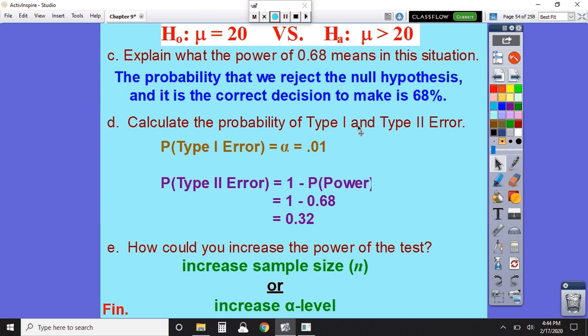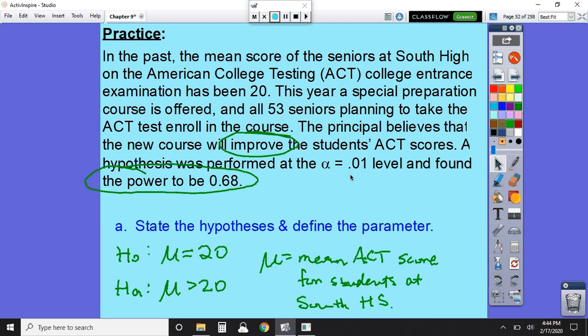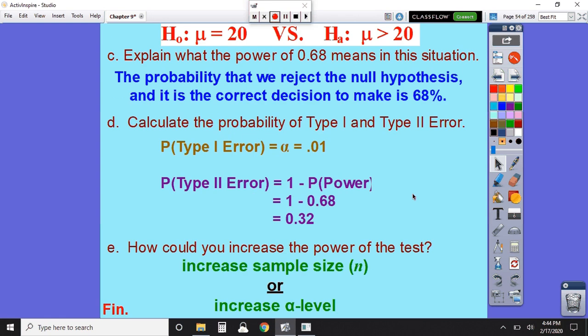Part D, calculate the probability of a type 1 and type 2 error. Well, a type 1 error was just our alpha value. And let me jump back here. We were told here that the alpha value was 1%. So we have a 1% chance of making a type 1 error that we reject the null hypothesis, but we really shouldn't have. Now, again, the type 2 error is directly related to power and they are direct complements of each other. So if we take 1 minus our power probability, then that will give us our type 2 probability. So we have a 32% chance of making a type 2 error and a 68% chance of correctly rejecting the null hypothesis.